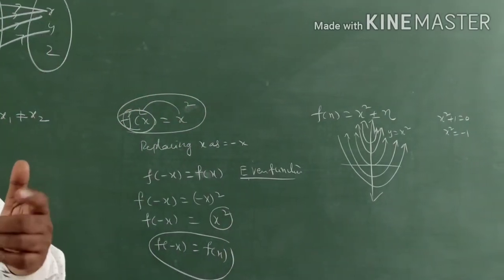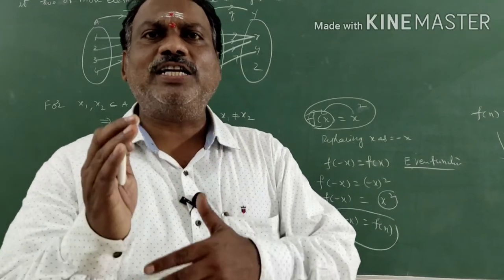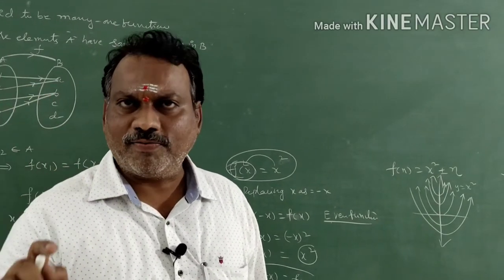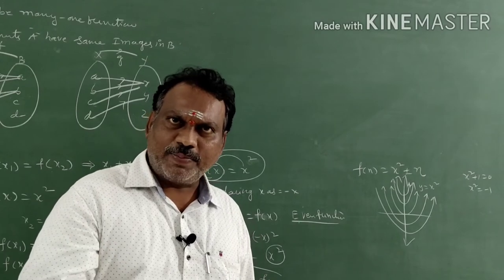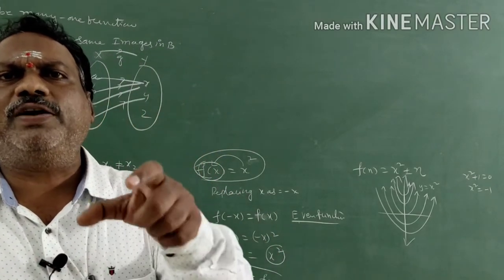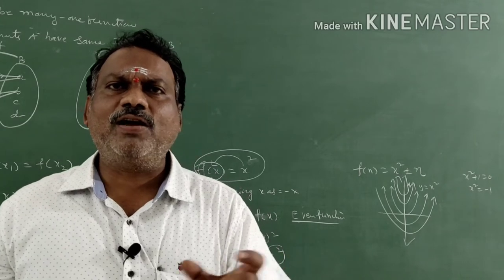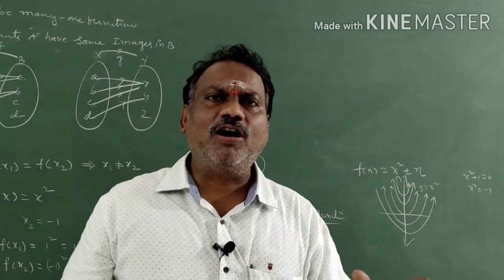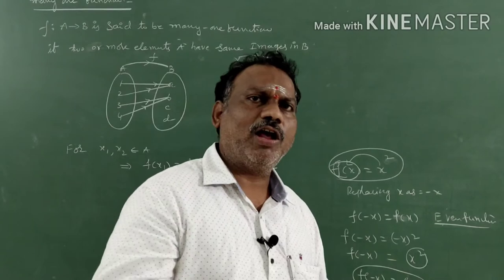Even functions and periodic functions are always many-one functions. Trigonometric functions — sin x, cos x, tan x, cot x — are all periodic functions. Periodic means after some interval the function repeats the same value. For example, cos 0 = 1, cos 360° = 1, cos 720° = 1. So cos 2π, cos 4π, cos 6π, cos 8π all give the same values. The smallest such interval is called the period — for cos x it is 2π. Such functions that repeat after an interval are called periodic functions. Both even functions and periodic functions are always many-one.